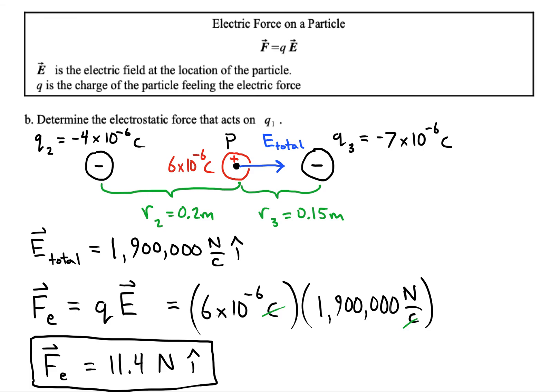Just out of curiosity, what if our particle in the middle had also been negative? If that were the case then our charge would be negative six times ten to the minus six. Our q would be negative and that would cause our force to be in the negative i direction instead of the positive, so it would have the same strength of push but it would be in the opposite direction.